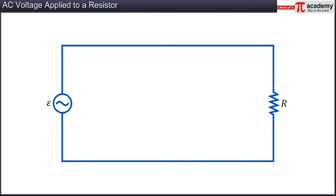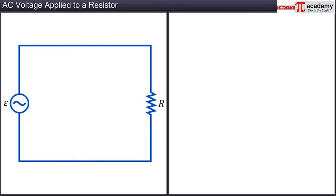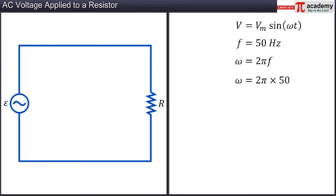The potential difference provided by the AC source is expressed as V = Vm sin(ωt), where Vm represents the amplitude of the voltage and ω represents the angular frequency of the oscillations of the potential difference. Angular frequency ω should not be confused with frequency. For example, the AC voltage supply to our households has a frequency of 50 Hz, which means the angular frequency is 100π radians per second.